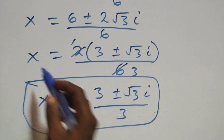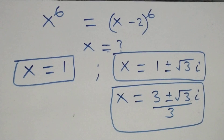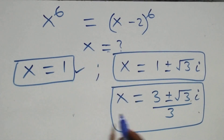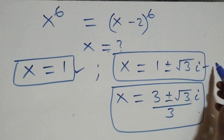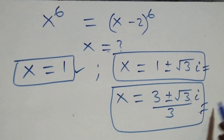Therefore, all together we have five solutions in this problem: one real solution x equals 1, two complex solutions from Case 1 which are 1 plus or minus root 3 i, and two complex solutions from Case 2 which are 3 plus or minus root 3 i over 3, making five solutions in total.